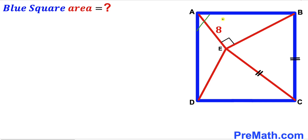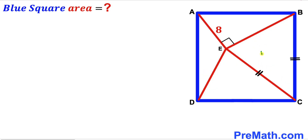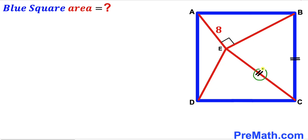Welcome to Pre-Math. In this video we have a blue square ABCD along with line segments AE, BE, CE, and DE inside the square. Triangle BEC is an isosceles triangle where CE equals BC. Line segment AE is 8 units and angle AEB is 90 degrees.